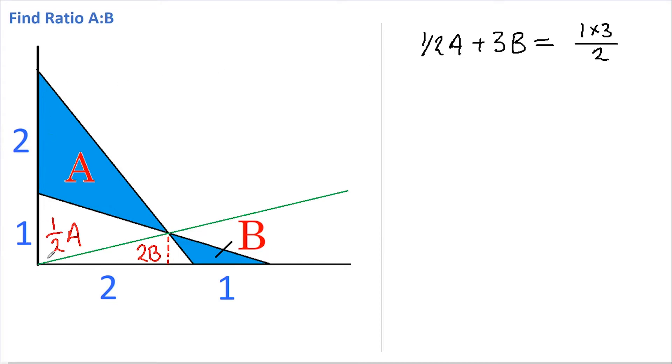Now let's consider this large triangle here. This has an area of A plus half A plus 2B, so that's 1 and a half A plus 2B. And the area of this triangle can also be calculated as being 2 plus 1 times 2, which is 3 times 2, and of course it's halved again for a triangle.